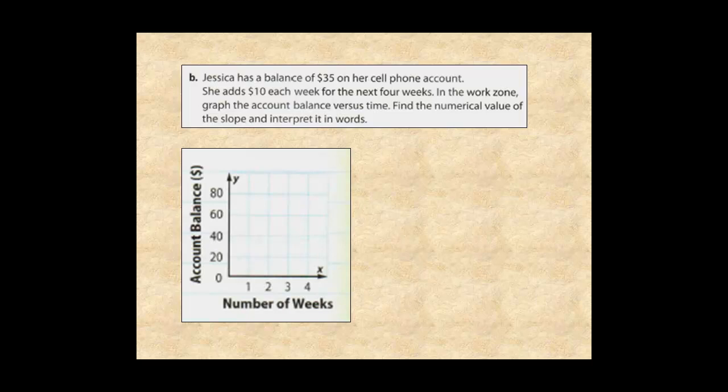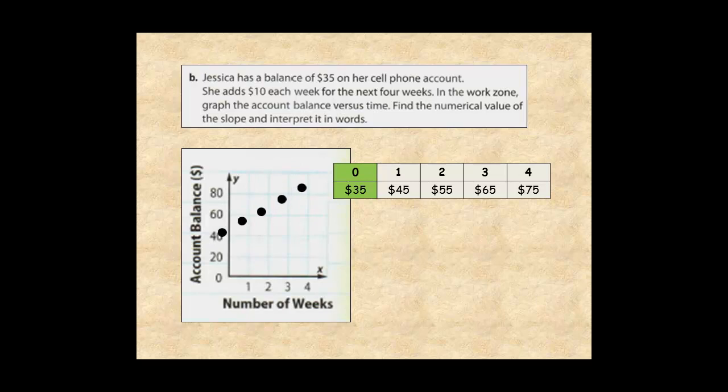If you create a table, graph the points, and draw a line, rise over run is 10 over 1, and the slope of the line is 10.